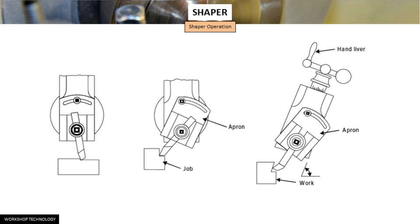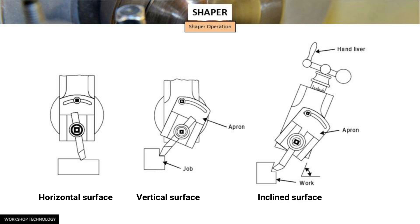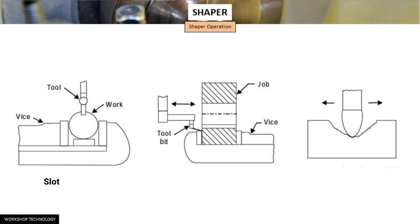These operations are explained here. First is machining a horizontal surface — the most common operation a shaper performs. Second is the machining of a vertical surface. Third is the machining of an angular or inclined surface.